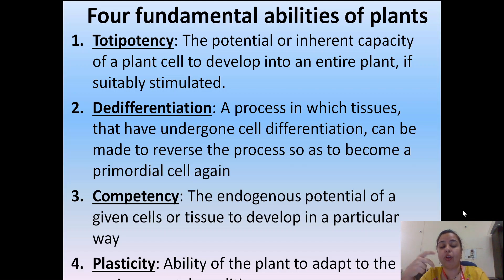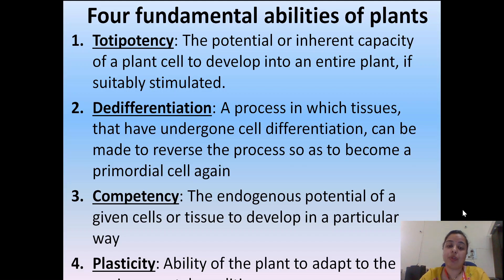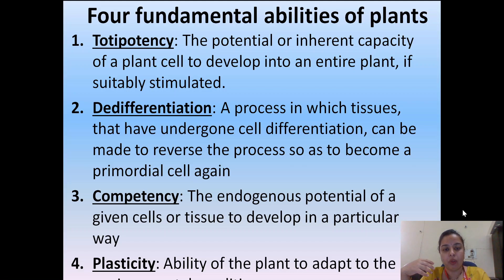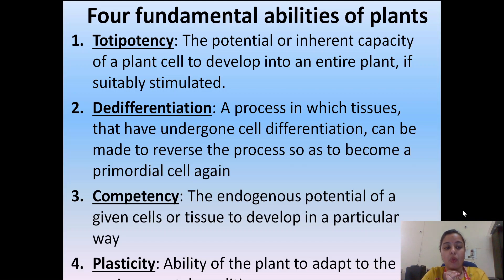The second ability of the plant is dedifferentiation. This is a process in which tissues that have undergone cell differentiation — meaning mature cells which cannot further divide — are made to reverse the process and become meristematic or primordial cells, and they start dividing again. This ability is called dedifferentiation.